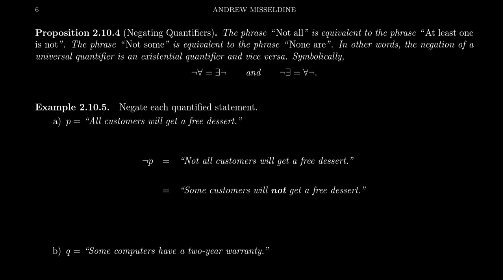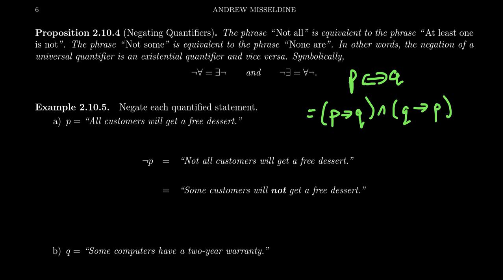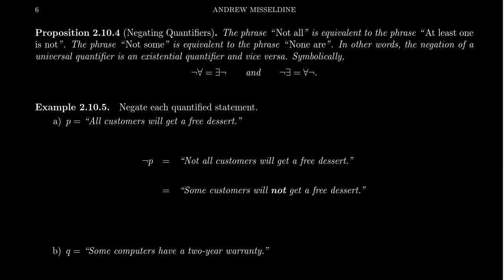We've now discussed how to negate compound logical statements using the DeMorgan laws — handling 'ands,' 'ors,' and conditionals (since a conditional can be rewritten as an 'or' statement). We can also do bi-conditionals, because a bi-conditional 'P if and only if Q' is logically equivalent to '(P implies Q) and (Q implies P).' Since a bi-conditional is just two conditionals joined by a conjunction, we know how to handle its negation.